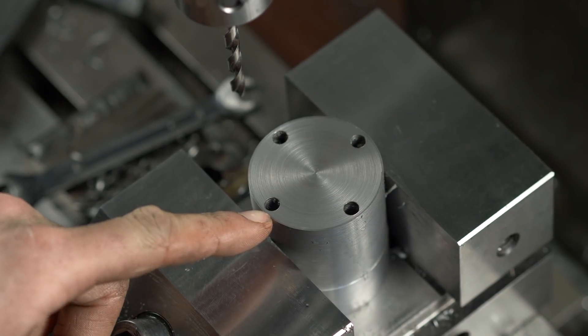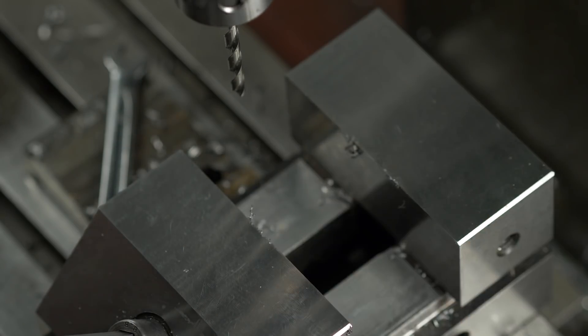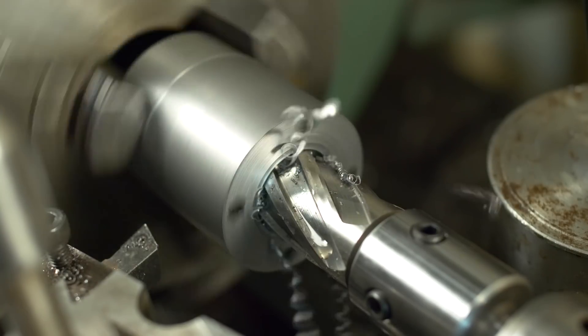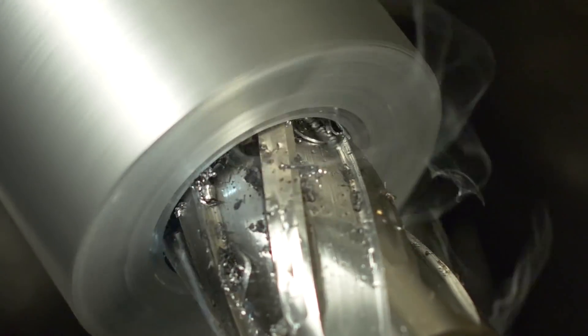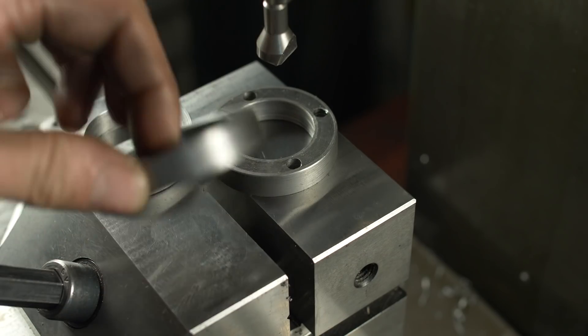I'm not going to bother countersinking these, there's three that are going to be made out of here, so I might as well do them all afterwards. In the end I cut these off from the bandsaw and I've just faced both sides.